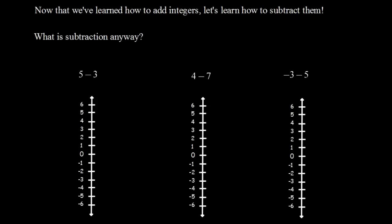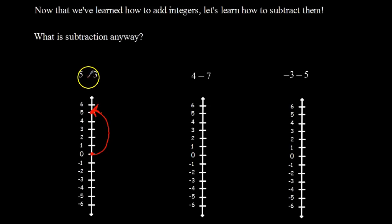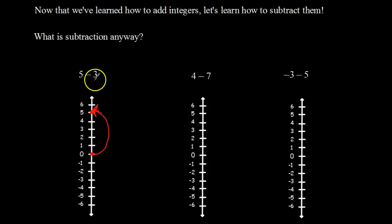You may have heard that subtraction always makes a number lower — that's not always true, and you're about to find out why. Let's look at 5 minus 3 on a number line. Start at zero and move up to five. Then subtract three — subtracting three means removing three. Normally for 5 plus 3 you'd go up, but subtraction says go the opposite way, so instead of going up three, you go down three.